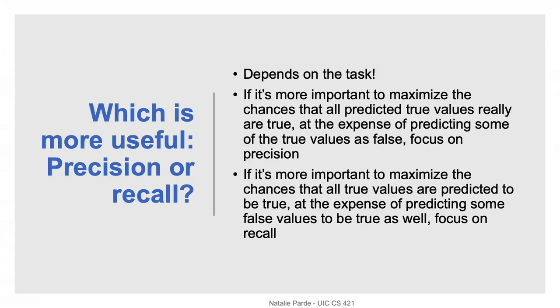In terms of what's more useful between precision and recall, that really depends on the task. If it's more important that the things you say are positive really are at the expense of predicting that some actual positives are negative, then you should focus on precision. However, if the reverse is true and it's more important that you capture all possible actual positives at the expense of predicting some actual negatives to be positive, then you should focus on recall.